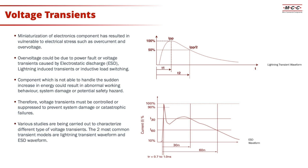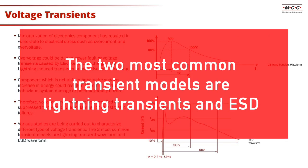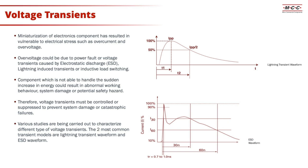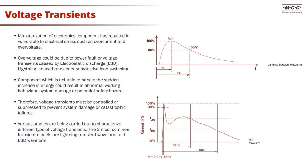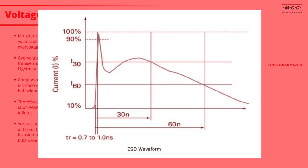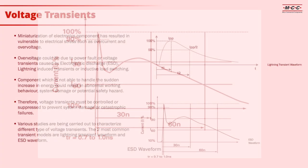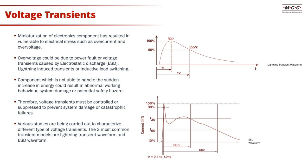Based on that, various studies have been carried out to characterize different types of voltage transients. The two most common transient world models are the lightning transients, which you can see on the graph here — a double exponential waveform — and the other model represents ESD waveforms. Both of these are characterized based on multiple experiments and observations.